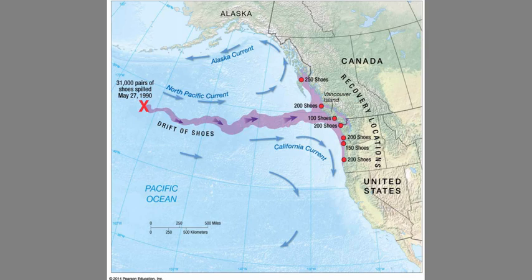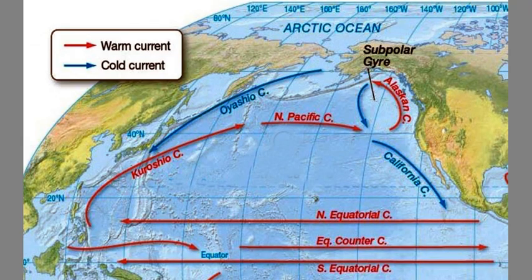A couple of decades ago, a bunch of shoes spilled off of a freighter in the North Pacific. The way those shoes washed up on land allows us to reconstruct the circulation of the North Pacific gyre. I hope you enjoy your day in lab, and you can now use the information here to answer the questions in your pre-lab exercise.